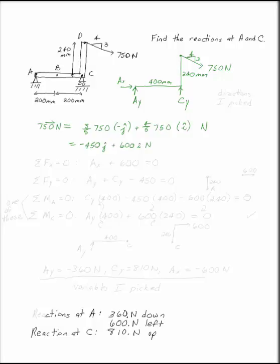Now we can write our sum of the forces in the x-direction, sum of the forces in the y-direction, and sum of the moments. In the x-direction, we have Ax, which is unknown, and 600i from the 750 newton load equals zero. And the sum of the forces in the y-direction, we have Ay plus Cy minus 450. Those are your j components.